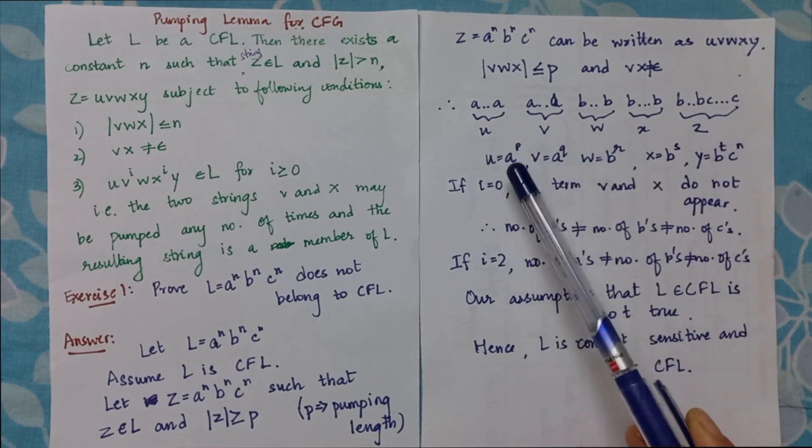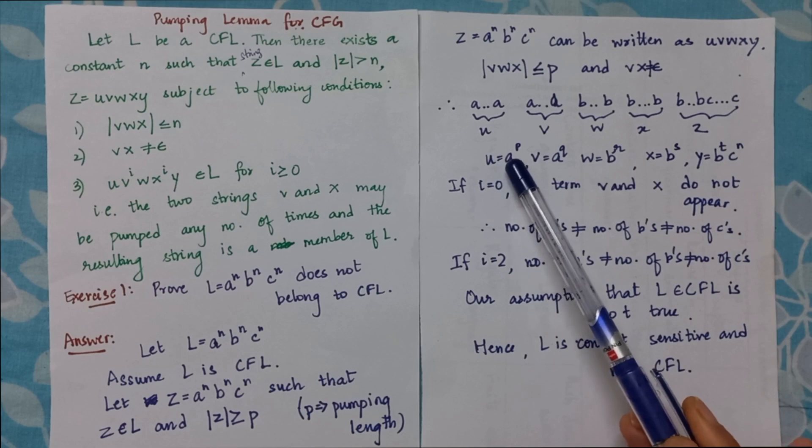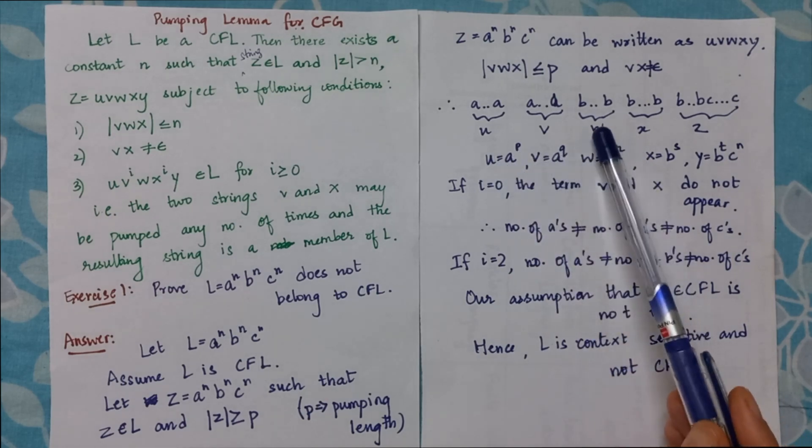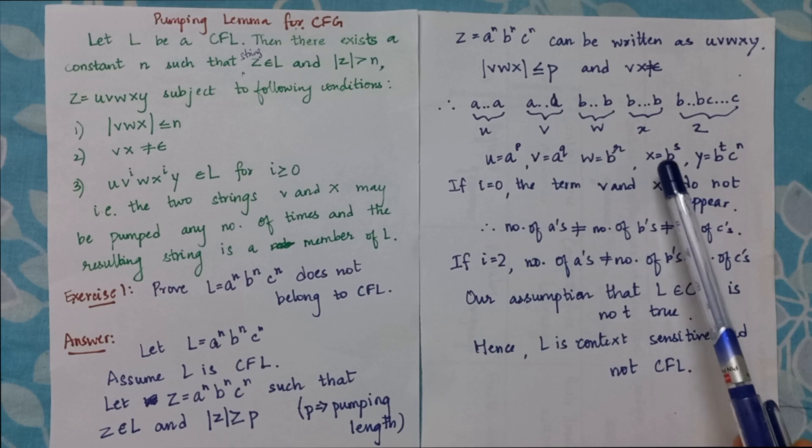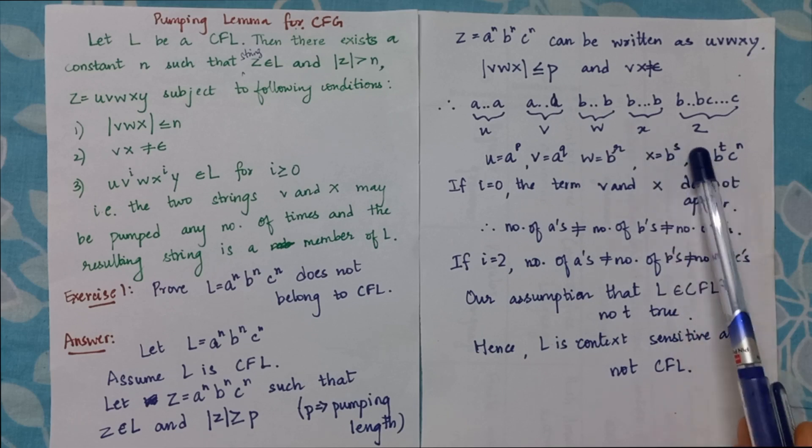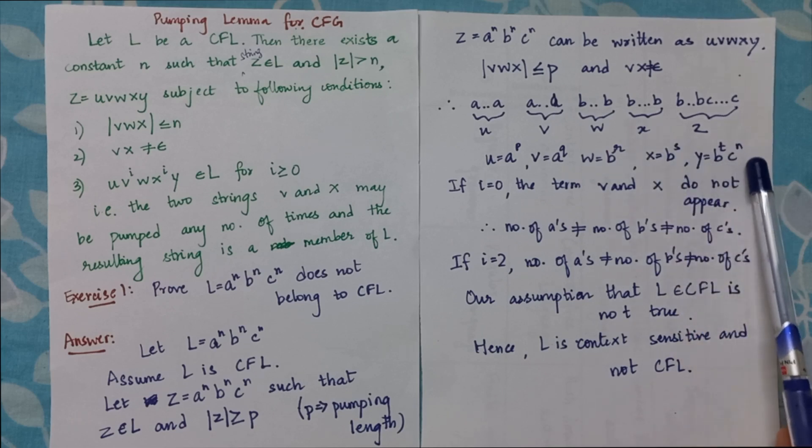So I get u as a^p, v as a^q, w as b^r, x as b^s, y equals b^t c^n.